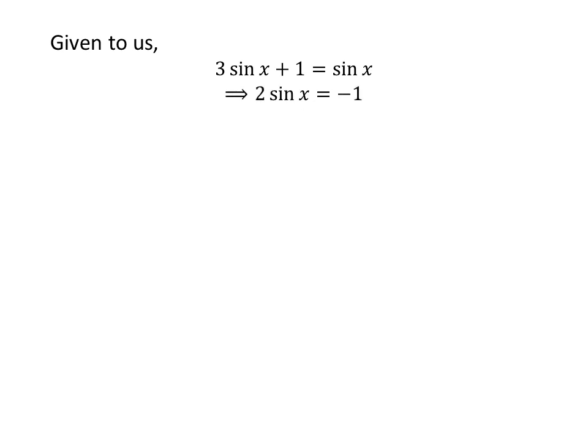If we take 1 to the right-hand side and sin of x from the right-hand side to the left-hand side of the equation, we get 2 times sin of x is equal to minus 1. Taking the factor 2 from the left-hand side to the right-hand side gives us sin of x is equal to minus half.